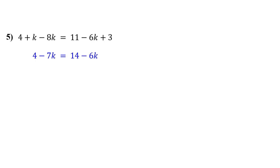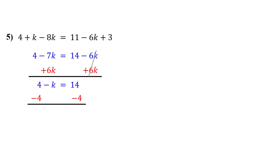Let's collect them on the left by adding 6k to both sides. Why do we add? Because 6k is being subtracted on the right, and doing the opposite moves it over to the left. Now on the left, negative 7k plus 6k gives us negative k. On the right, these cancel out, leaving just 14. This is now a two-step equation. So next, subtract 4 from both sides to isolate negative k. On the left, the 4s cancel out, leaving negative k. On the right, we get 10.